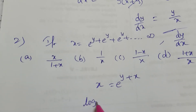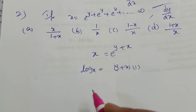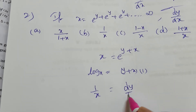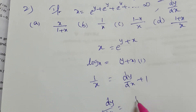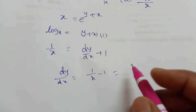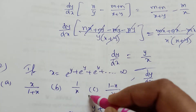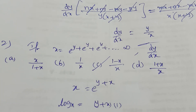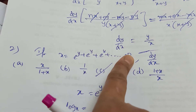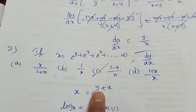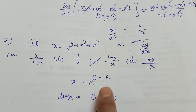Then take the log. Log x equal to y plus x — here log e to the base is 1. Now do derivative: 1 by x equal to dy by dx plus 1. Now tell me dy by dx value. dy by dx equal to 1 by x minus 1. Take LCM: 1 minus x by x. This is the value. So whenever powers with variables are there, the technique is to take log. Don't forget this step — then easily we get the value.